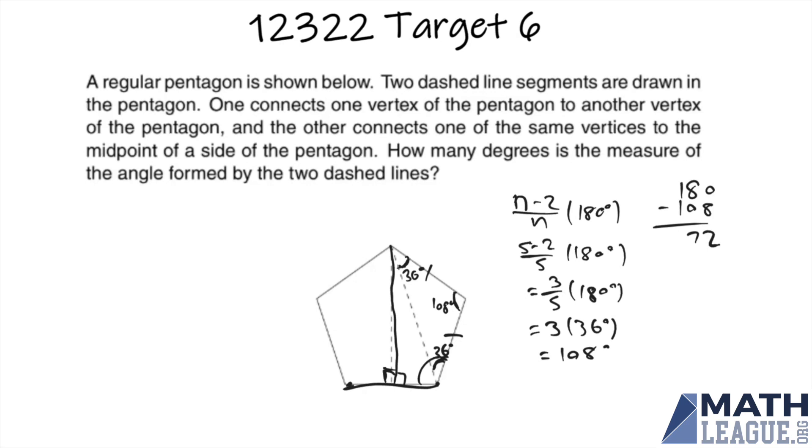So we want to find this angle here, which has measure 108 minus 36 or 72 degrees. Finally, we want to find this angle here. This can be done by taking 90 degrees minus 72, so our answer is 90 minus 72, which is 18.